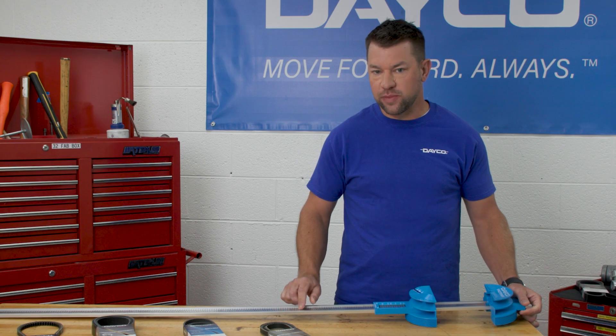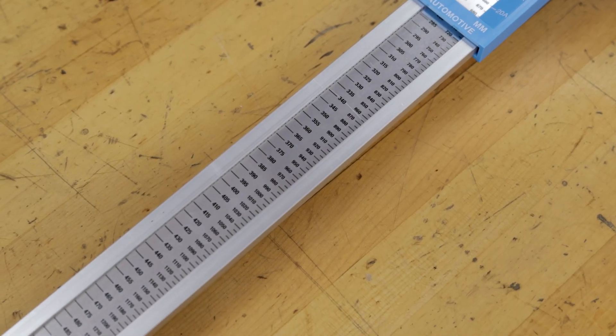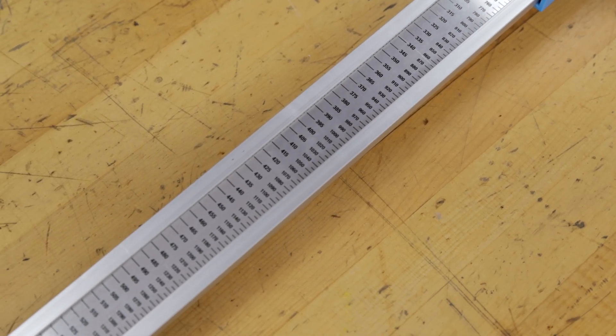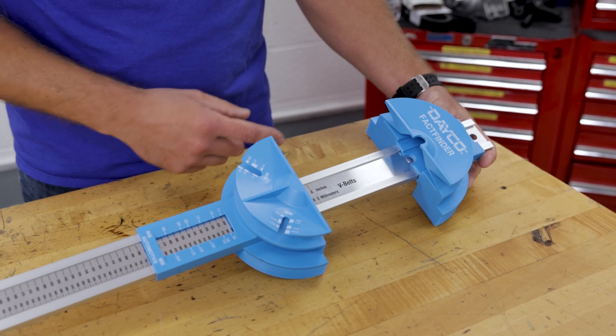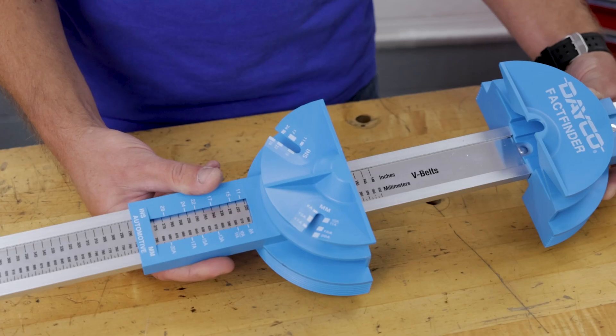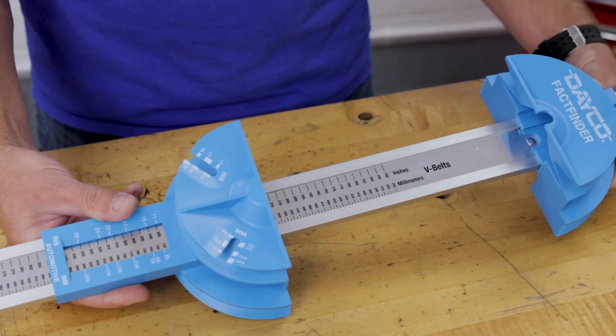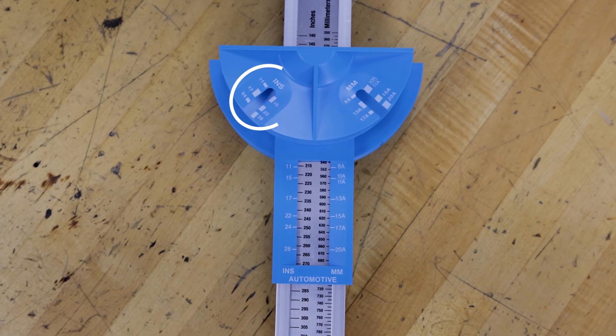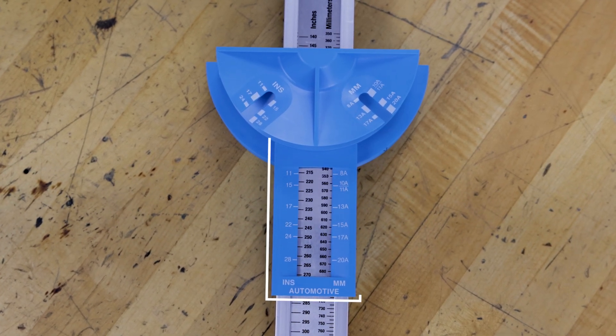This part here is the measurement stick with both metric and standard increments. There are two measurement belt mounts. The top is stationary and the bottom slides. The bottom has an inches slot, a millimeter cutout, and a measurement window.